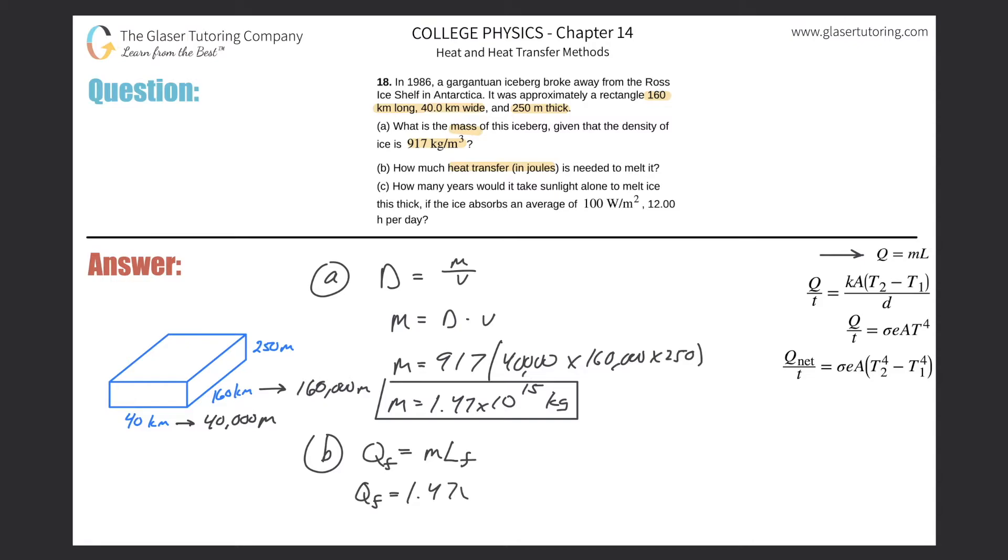So basically just plug it in. We know the mass of 1.47 times 10 to the 15th and the latent heat of fusion for ice is 334. Now just be careful - this is in kilojoules. They want it in joules. So this number has to be multiplied by 10 to the third, or basically multiplied by 1,000, or in other words 334,000. And then simply multiply it out. I'm going to use the exact number here. So basically 4.90 times 10 to the 20th joules.